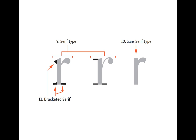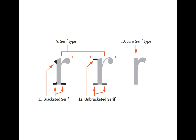Number eleven: we're starting to talk about specific kinds of serifs. Number eleven are bracketed serifs. You'll notice there's a curved transition from the upright strokes to the horizontal serifs. I like to think of it like putting a shelf on the wall using a curved bracket to hold it up — that's a bracketed serif, it has that curved transition. Number twelve: the unbracketed serifs. The serifs jut right out from the strokes with no transition — it's a sharp corner, no curve. If you imagine a shelf that just comes right out of the wall without any visible support, it's unbracketed.